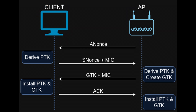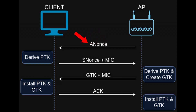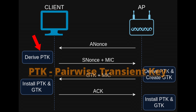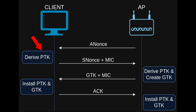In the first message, the access point sends the ANonce to the client, which is just a random number. Then the client derives the PTK, which stands for Pairwise Transient Key, which is important to us, but we will come back to it later.